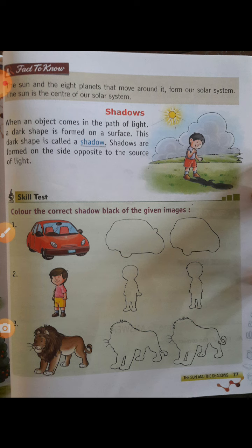तो अब इसमें skill test दिया है। Skill test में देखिए — colour the correct shadow black on the given image. यानि आपको image दिया है one to three: first में car दिया है, second में boy दिया, third में lion दिया है। इसके दो round figure की तरह दिया हुआ है, यह आपका एक image बता रहा है जिसका shadow है। तो जो perfect होगा उसे आपको color करना है।